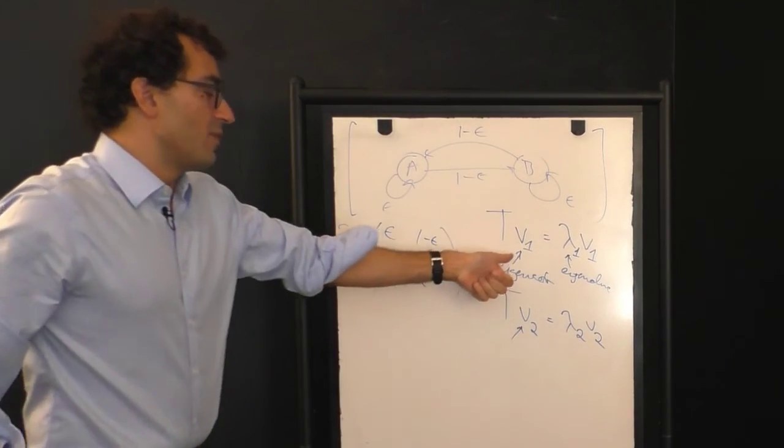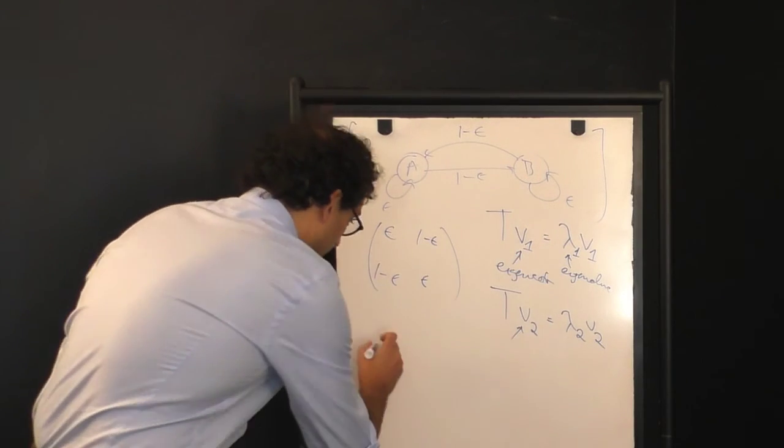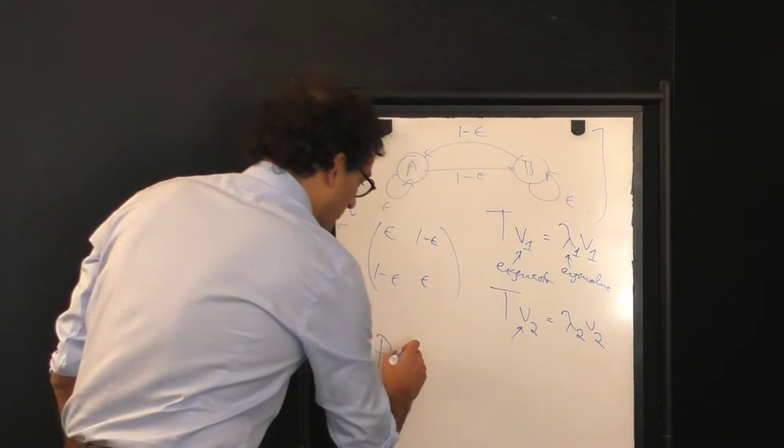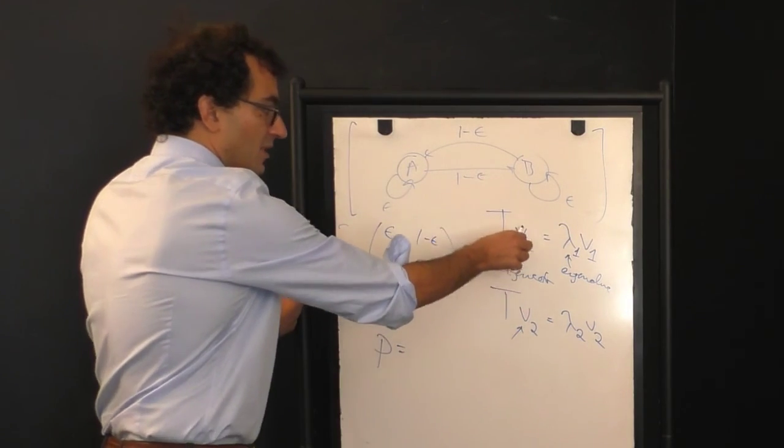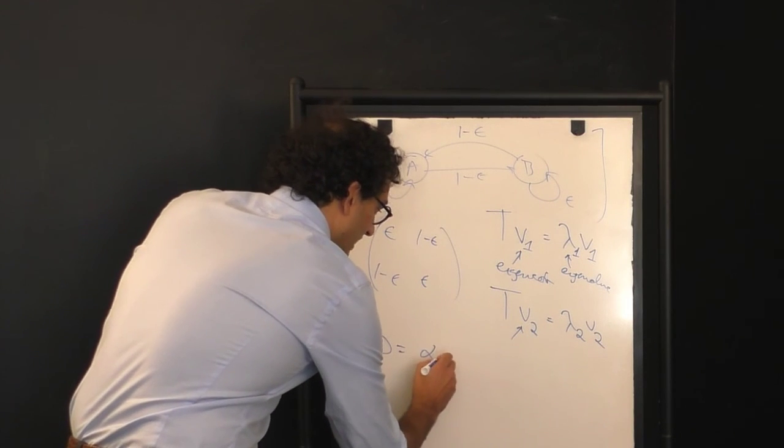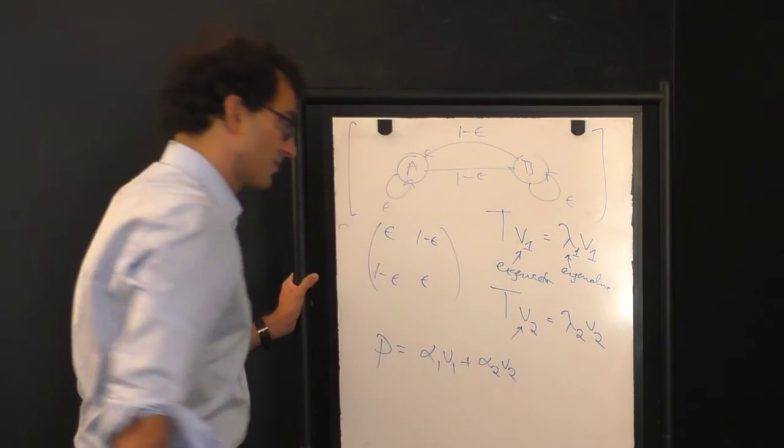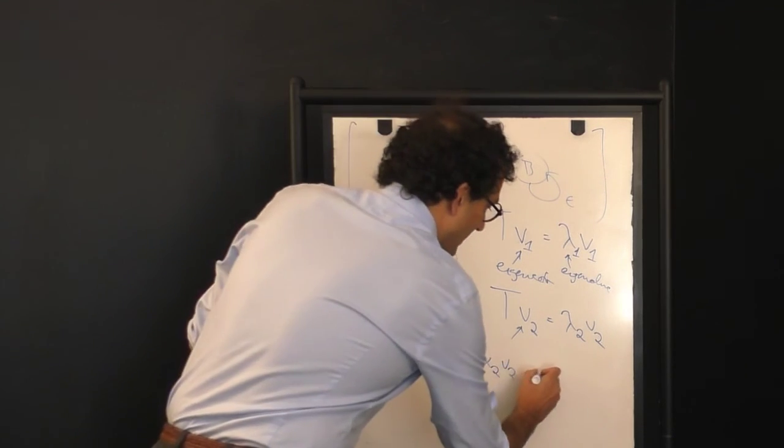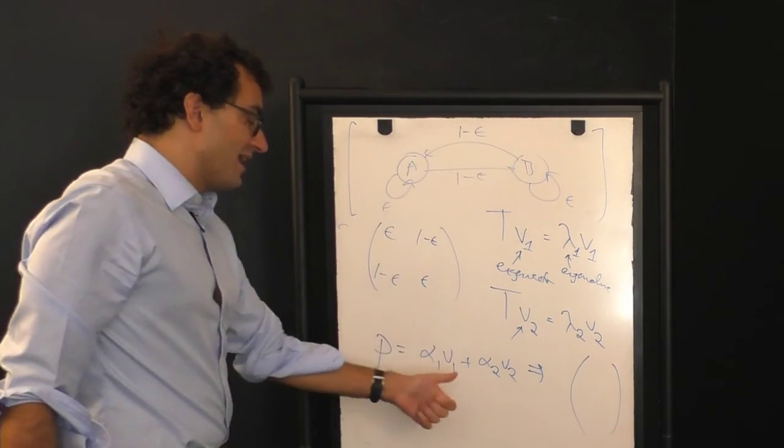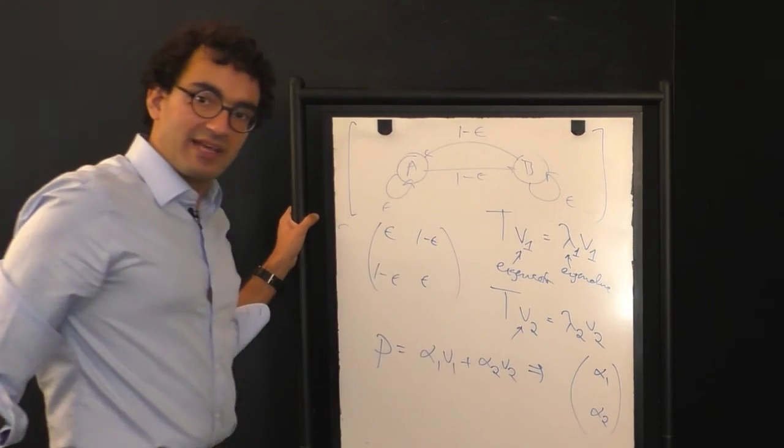A matrix like this generically has two eigenvectors and two eigenvalues. So we can write the eigenvectors as V1 and V2. And now what I'm going to do is for an arbitrary probability distribution over states A and B, I'm going to represent that as a weighted sum over these two eigenvectors. So we'll call that alpha 1 V1 plus alpha 2 V2. If I now make a column vector that represents that probability in eigenvector space, what I'll have is an alpha 1 and an alpha 2 like this.